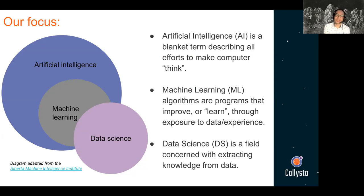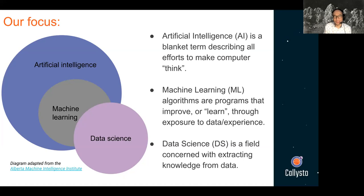When I talk about data science — a data scientist having math skills, programming skills, and subject matter knowledge — how does data science fit in with artificial intelligence and machine learning? Generally speaking, AI is the big field of study, a blanket term describing our efforts to make computers think like humans. Within artificial intelligence, we have machine learning: techniques and algorithms that allow us to improve or learn through exposure to data or experience. Data science applies those techniques developed by machine learning researchers to real world data to derive knowledge about business outcomes or policymaking.